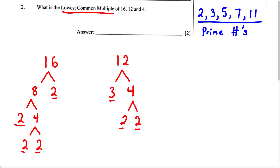Now for our last number, we have 4. We know the factors of 4 are going to be 2 and 2. And we know 2 is a prime number, therefore we have found all of the prime factors for 4.